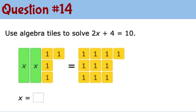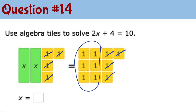Question number 14: in this diagram, I take out 4 unit tiles on the left and also 4 unit tiles on the right. Now we can easily see that there are 2 x tiles on the left and 6 unit tiles on the right. Dividing these 6 remaining unit tiles between the 2 x's, each x tile gets 3 unit tiles — so x equals 3.